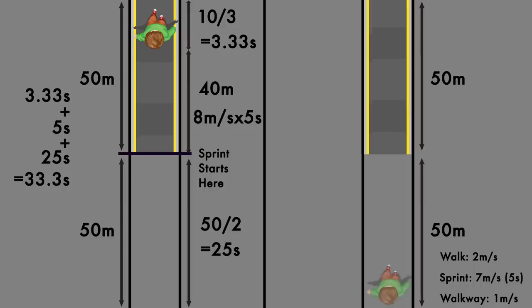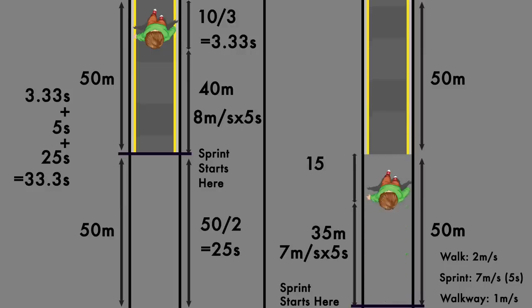Now let's compare that to the same person who sprints while off the walkway. If this person just starts sprinting immediately, they will move at 7 meters per second for 5 seconds and thus travel 35 meters. Then with 15 meters to go until the walkway, at 2 meters per second it will take them 7.5 seconds.